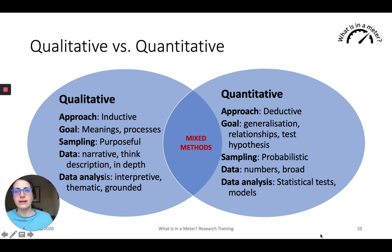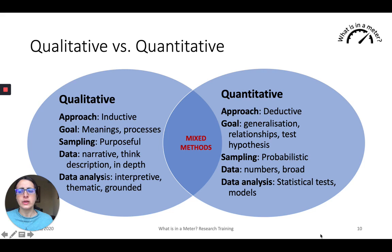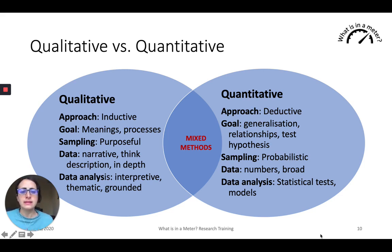There are other technical differences. The sampling in quantitative research is probabilistic sampling, whereas in qualitative research we call it purposeful sampling — we sample depending on our research question, our research interests, and what it is that we want to find out. In analysis, quantitative research uses statistical tests and models, but for qualitative research we interpret the data using specific techniques that Dr. Waller will be talking about in more detail.